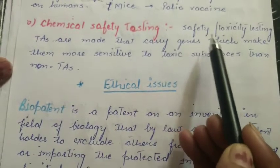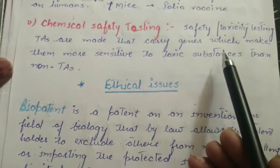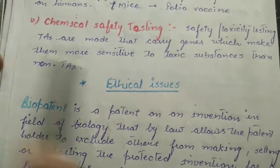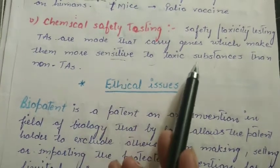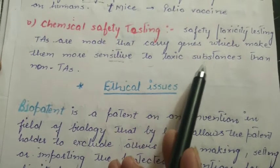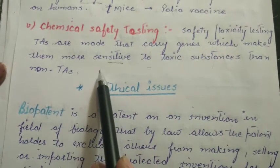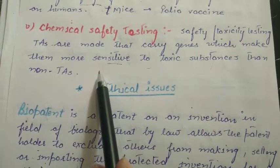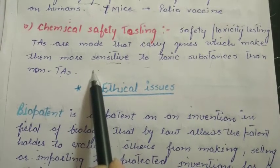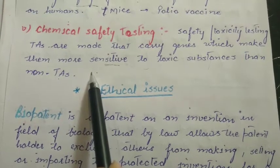We also use transgenic animals for chemical safety testing. Many drugs or chemicals have different effects on our body. Each person may react differently to the same drug — some people are sensitive and some are not. Some people are negative to a medicine while others are not. We do not know which gene is responsible for generating sensitivity to which kind of drug.